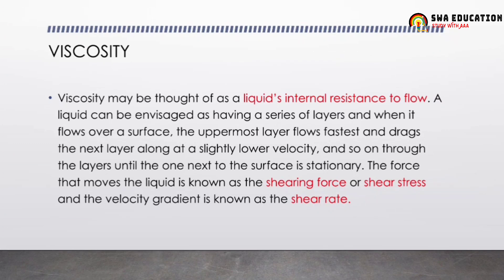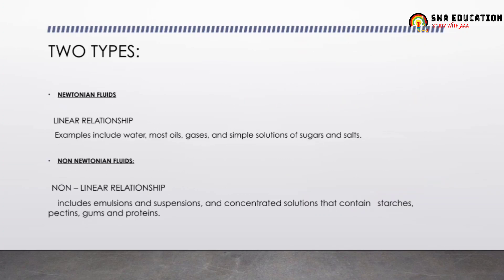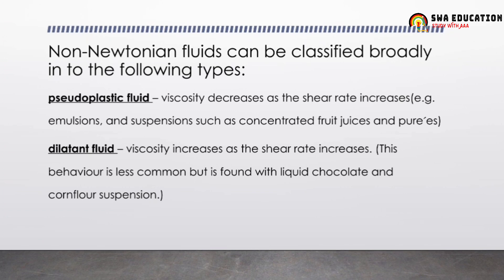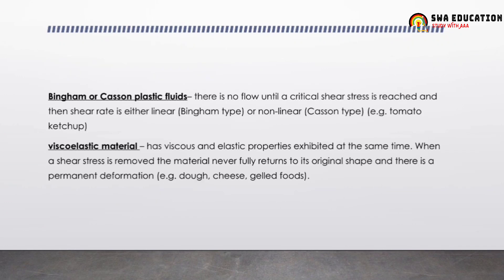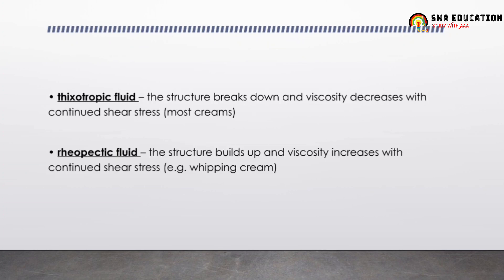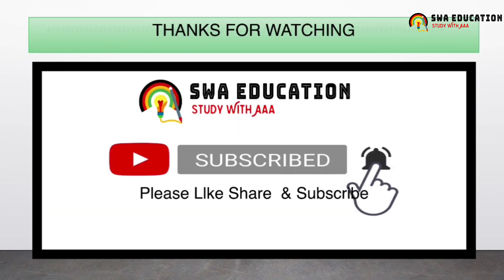Viscosity is the liquid's internal resistance to flow. There are two types: Newtonian fluids, which follow a linear relationship, and non-Newtonian fluids, which follow a non-linear relationship. The types of non-Newtonian fluids are pseudoplastic, dilatant fluid, Bingham or Casson plastic fluids, viscoelastic material, thixotropic fluid, and rheopectic fluid. Remember the examples and which type they fall into — that is very important for the exam.